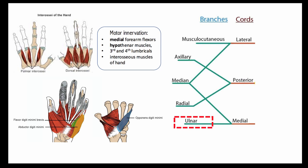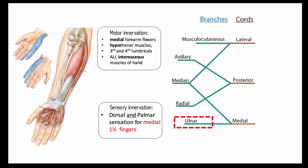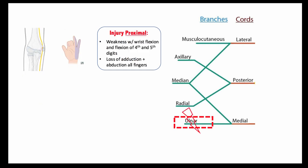The ulnar nerve will also innervate the hypothenar muscles of the palm, the third and fourth lumbricals, and all the interosseous muscles of the hand. The ulnar nerve provides sensation to the dorsal and palmar aspect of the medial 1.5 fingers.